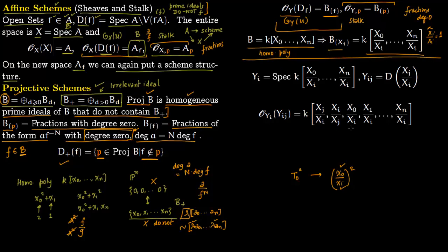That was our example of a projective scheme. For each i you have affine open pieces Yᵢ = Spec(K[X₀/Xᵢ, …, Xₙ/Xᵢ]), giving n+1 such sets Y₀, Y₁, …, Yₙ. Each Yᵢ looks like an affine scheme — you have a Spec right there.